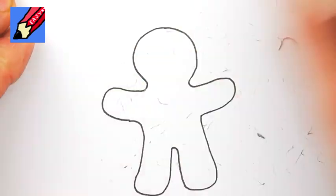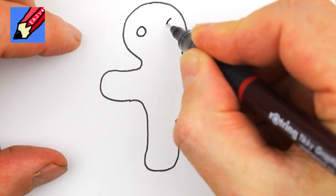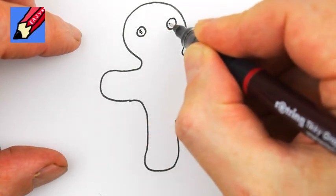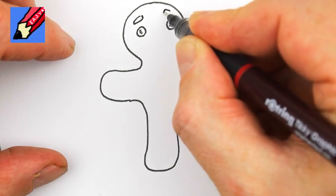Erase those pencil lines. We'll want a couple of blobs of icing for the eyes and then little flecks in there like that, and maybe little blobs of icing for the eyebrows.